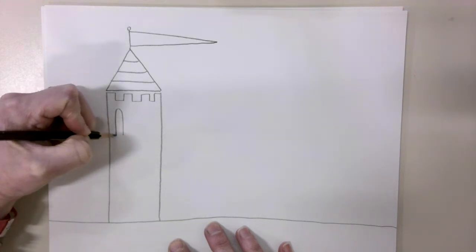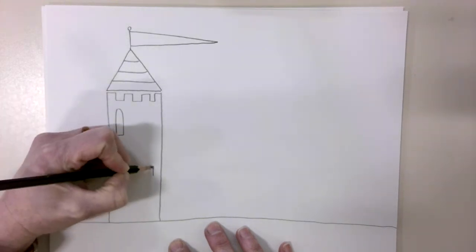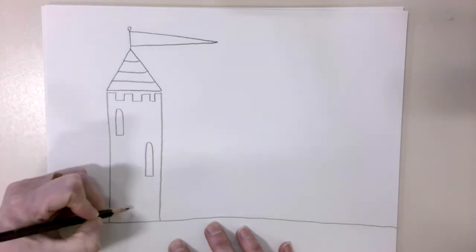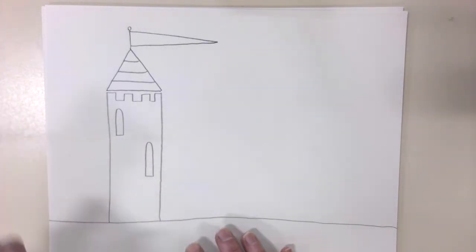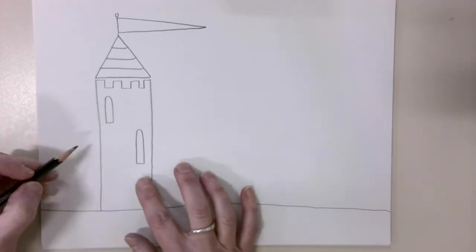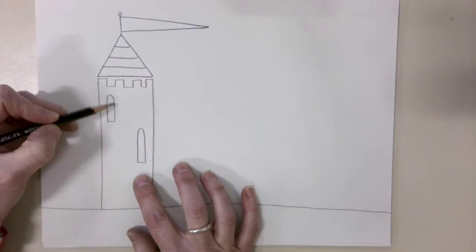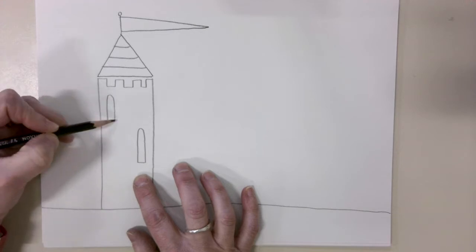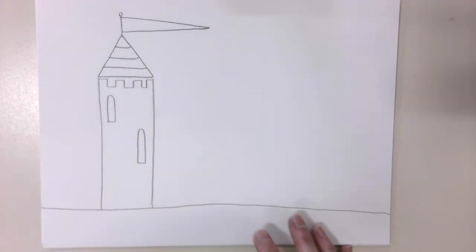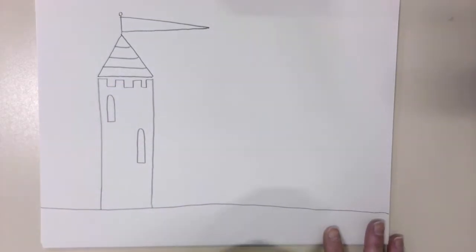Castle windows a long time ago were long and skinny because they did not have glass in them, so they needed to keep the heat inside the castle. There are different shapes. You could make it just a rectangle, you can make it have a point at the top, make it round. You could put as many windows on your castle tower as you want.